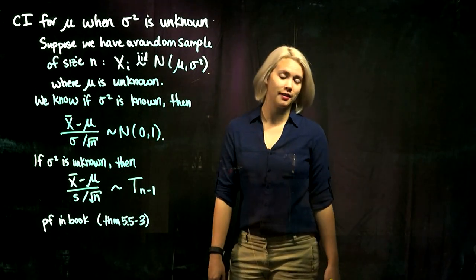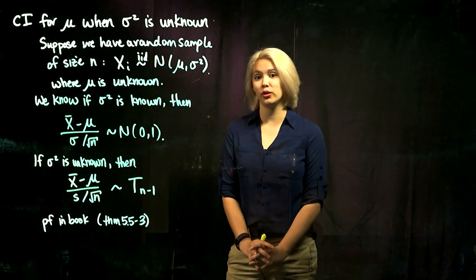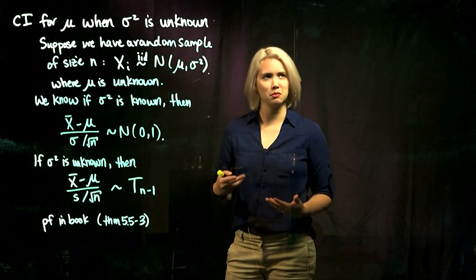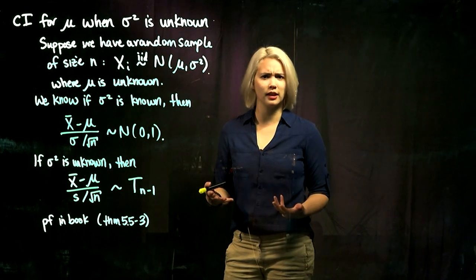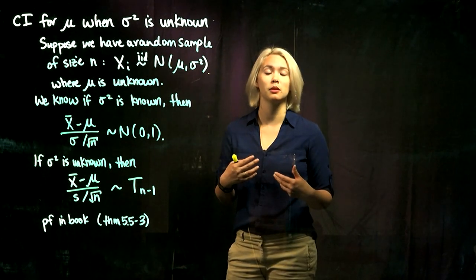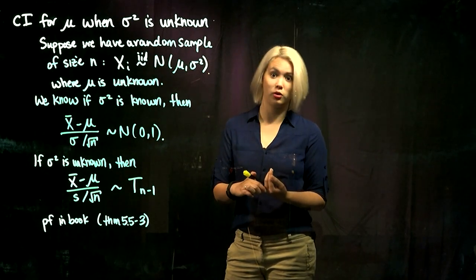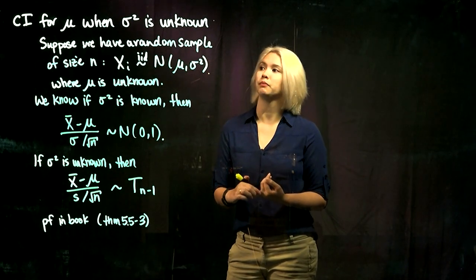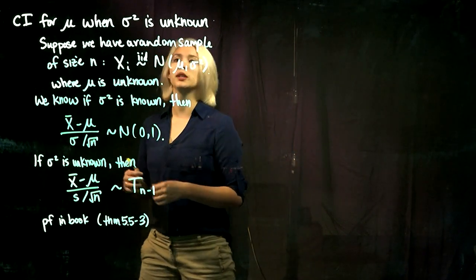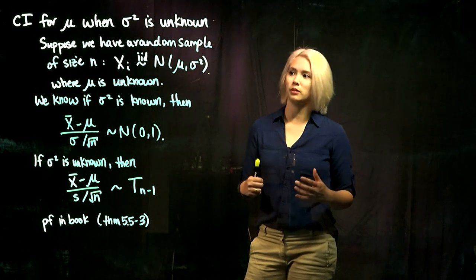We previously discussed confidence intervals for the mean when we know the standard deviation or variance. But this is not usually the case — we would not know the variance but not know the mean. A more realistic assumption is that we don't know the variance just as we don't know the mean. So we're trying to get a confidence interval for mu when sigma squared is unknown.